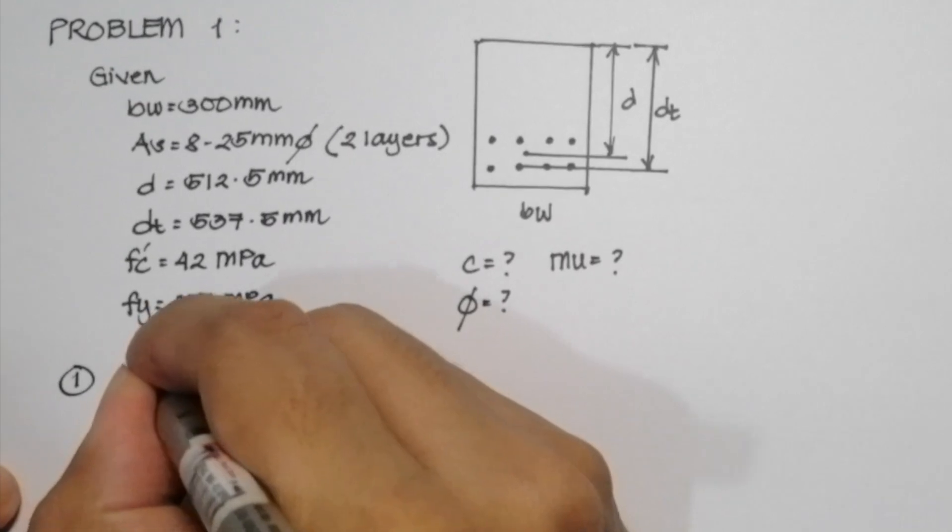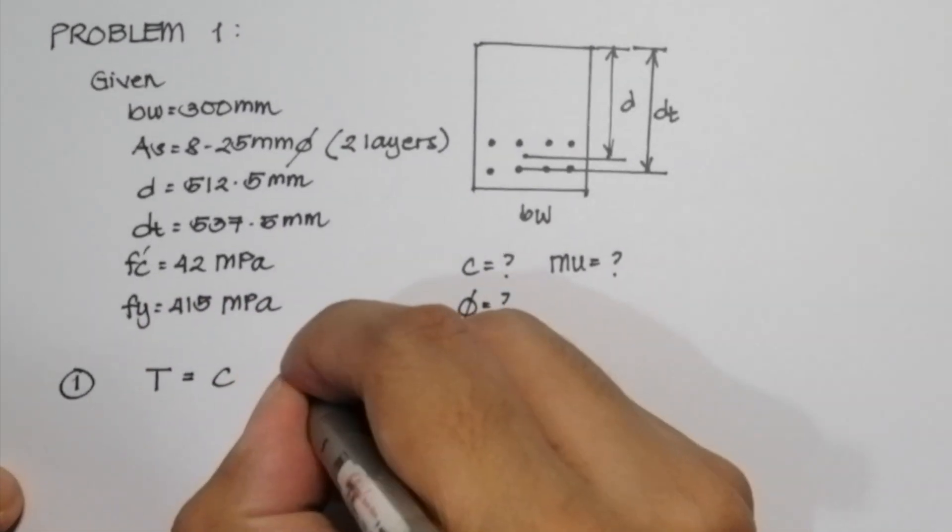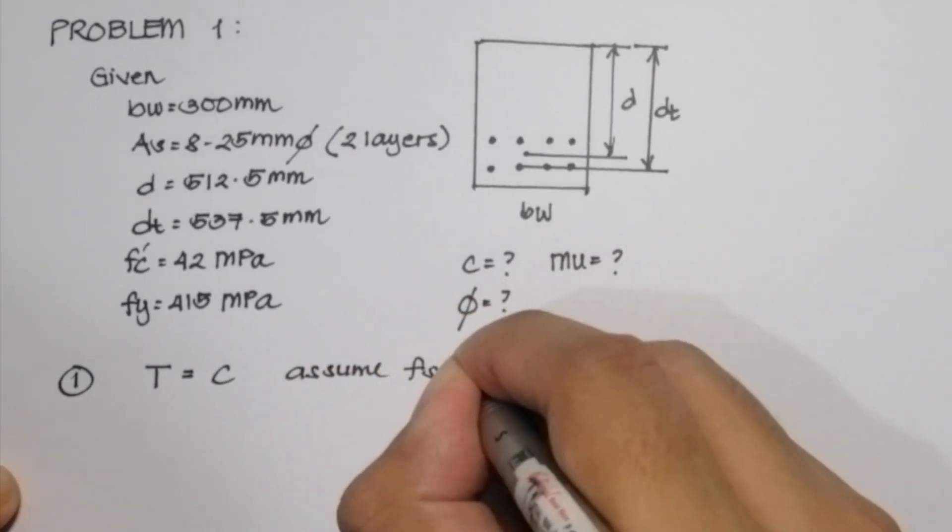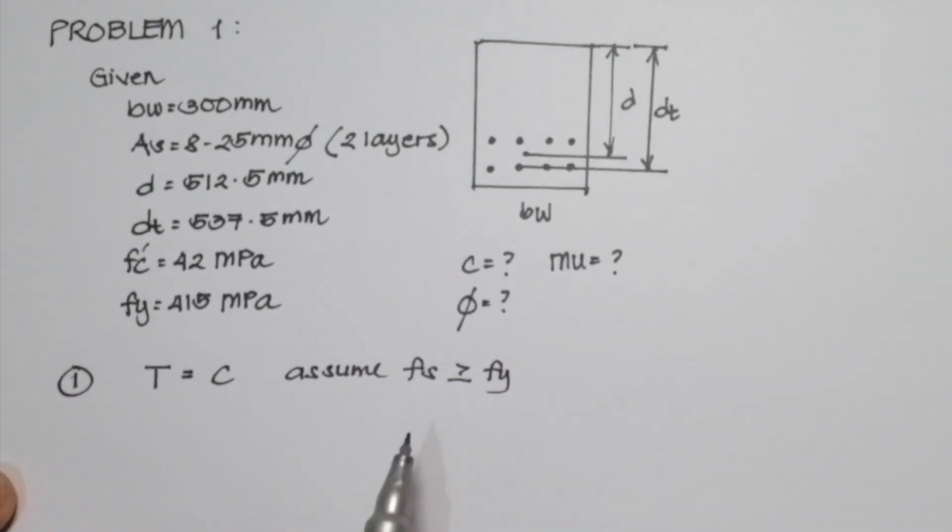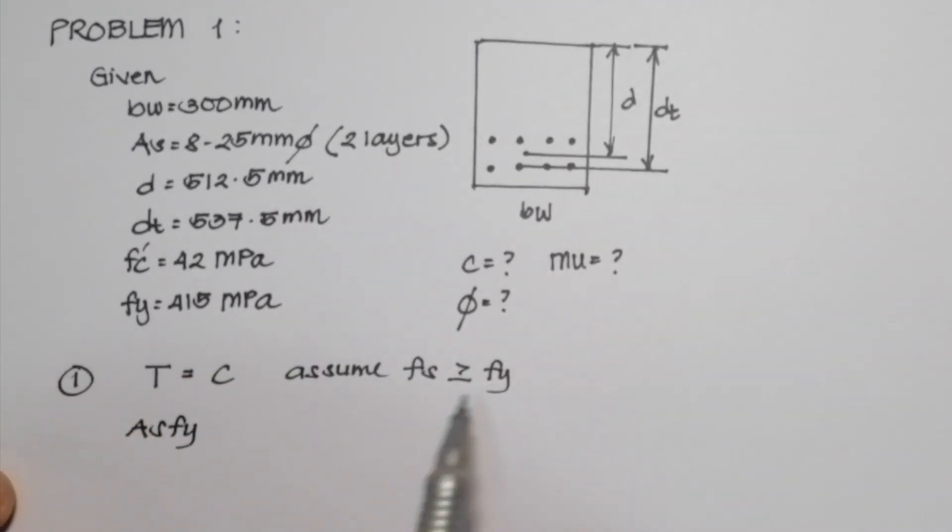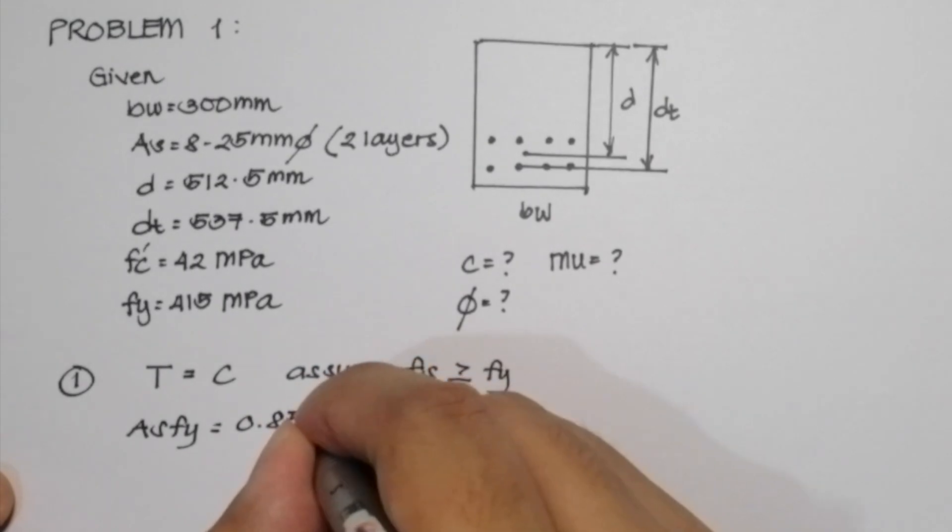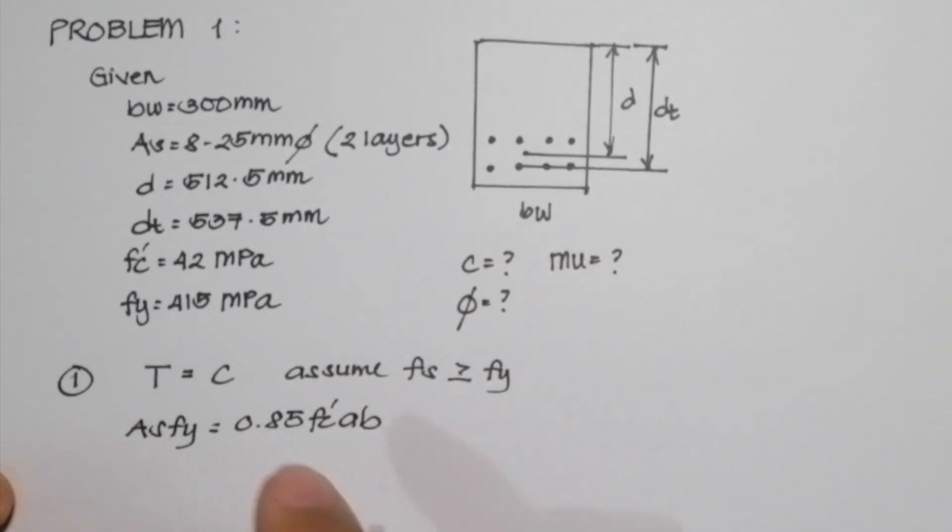The first step is that we equate the value of the tensile force and the compressive force in the beam. We assume the value of our stress in the steel. In this case, we will assume that the stress is greater than the yield strength of the steel, so we will use the value of Fy in our calculation. So As multiplied by Fy, and C is equal to 0.85 FC' A times B as the area of the concrete block.